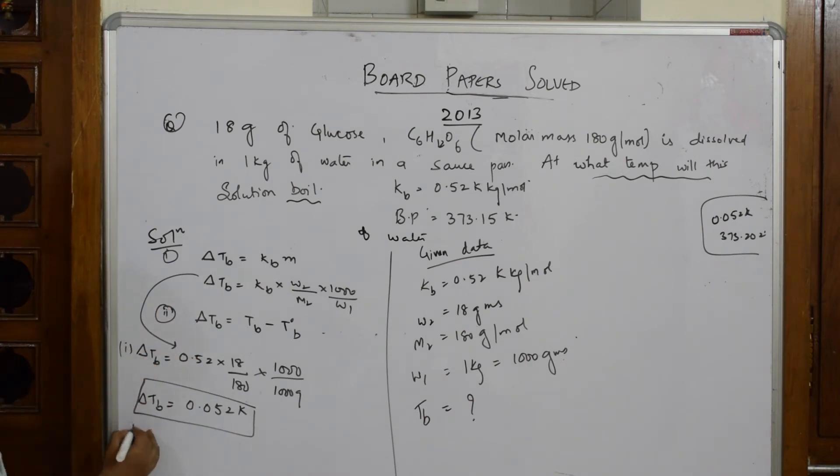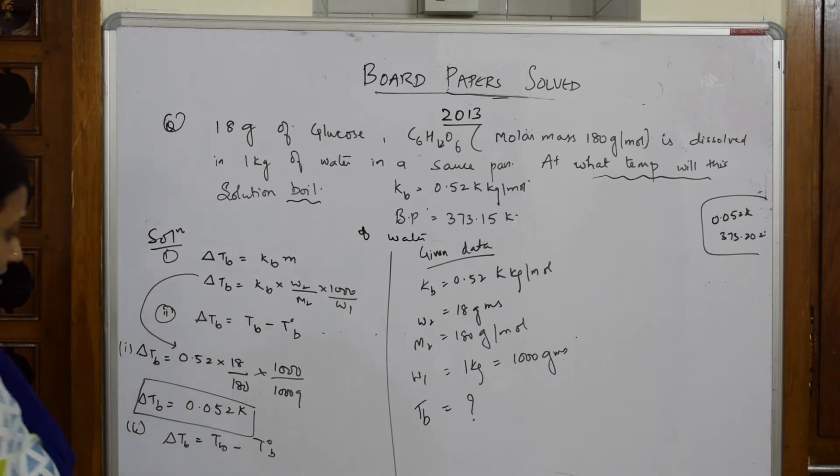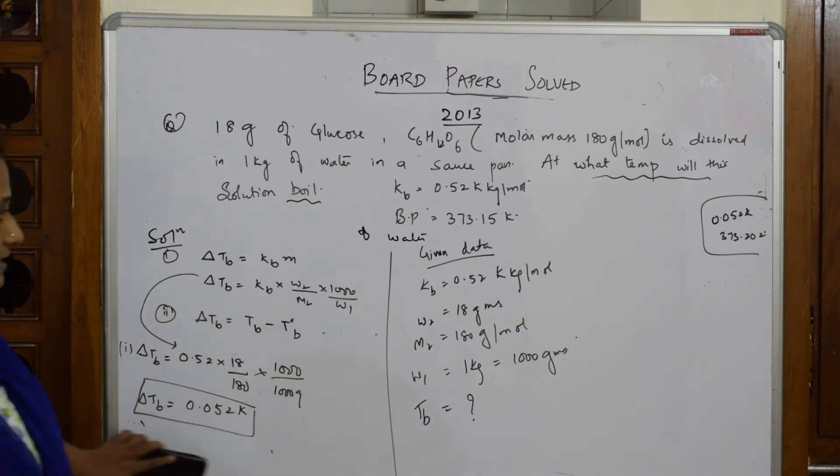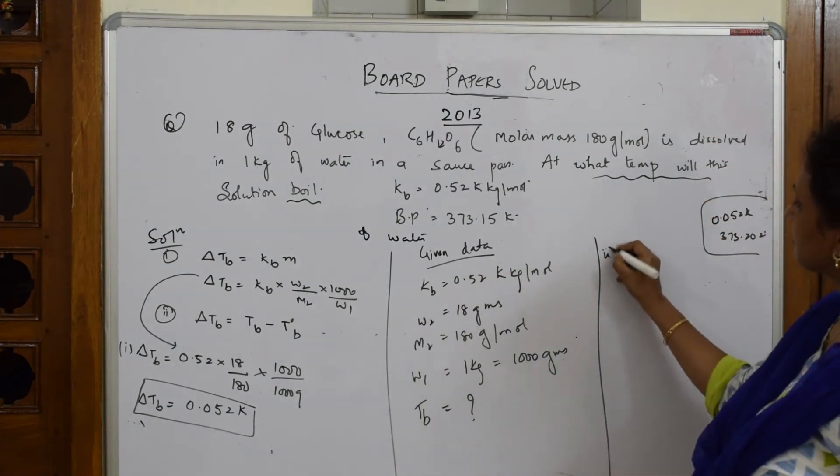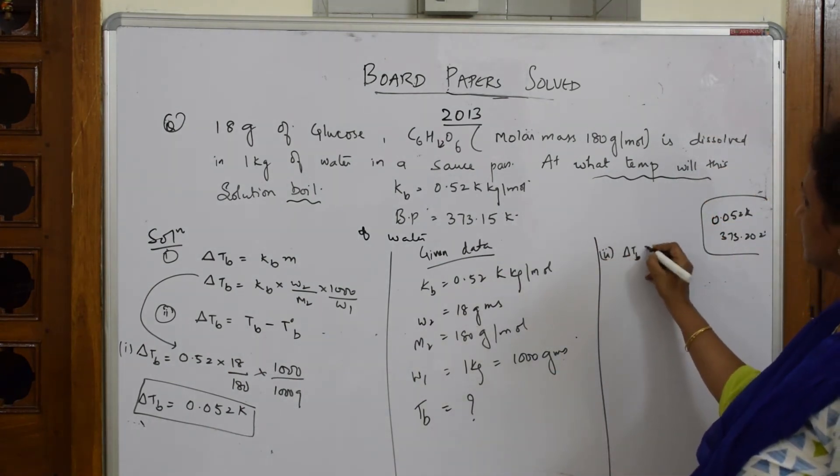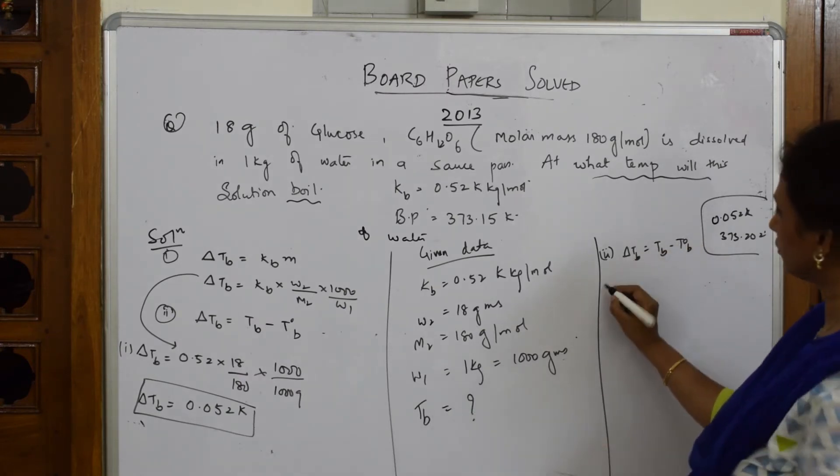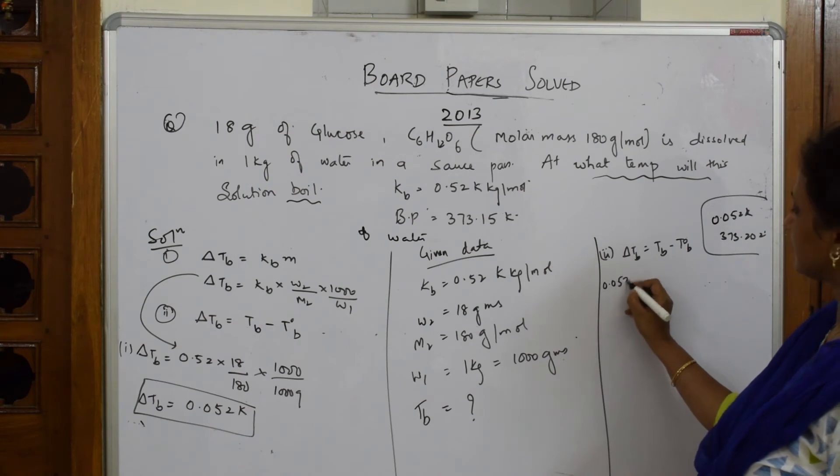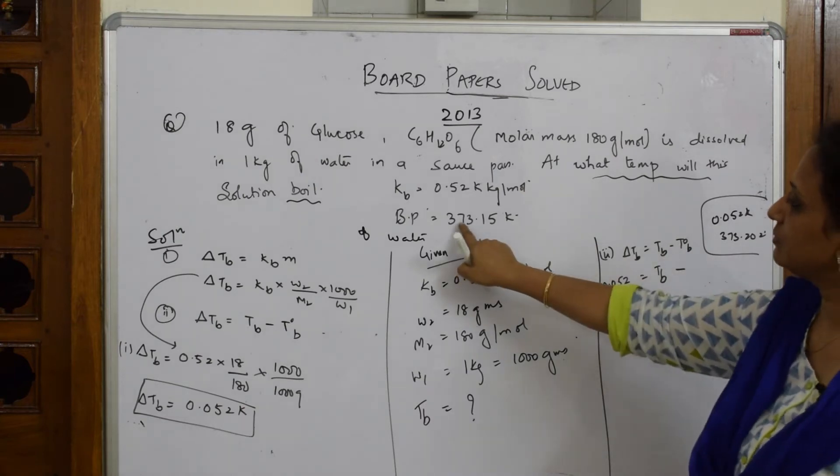First answer is over. I still have to find Tb, so let us use the second relationship. Delta Tb = Tb - T0b. What is delta Tb? 0.052. I hope maybe this is not clear here, okay, I'll write it here better. So in part two, delta Tb = Tb - T0b.